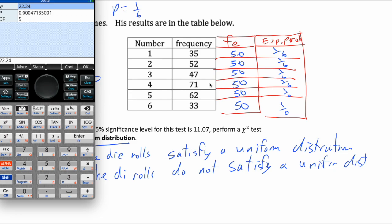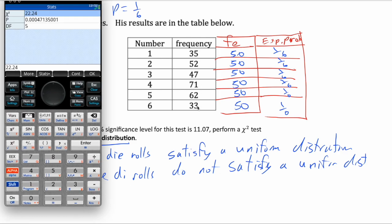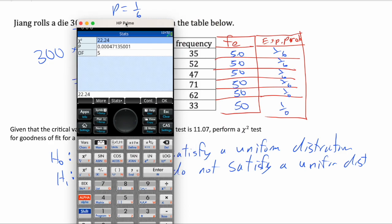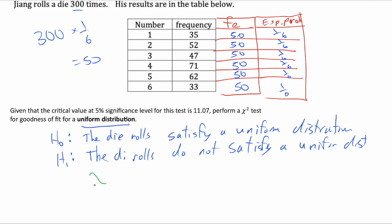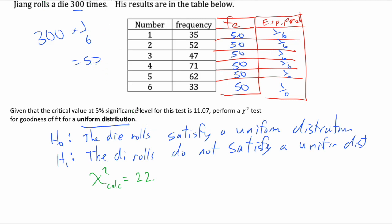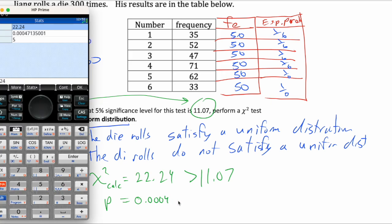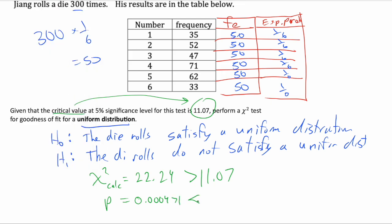It gives you a chi-squared value, the p-value, and df — in case they ask you for that. The degrees of freedom is always the number of rows minus 1. The chi-squared calculated is 24.24, and the p-value is 0.000471, which is very tiny — smaller than the significance level.